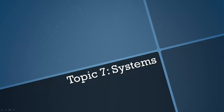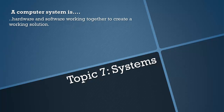Hello everyone and welcome back to another video covering the AQA GCSE Computer Science course. We're moving on to topic number 7, which is systems, or more specifically computer systems. A computer system is hardware and software working together to create a working solution. This definition has been taken straight from the specification, so make sure you learn it because it may well come up.